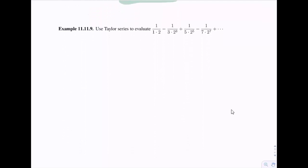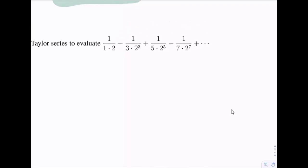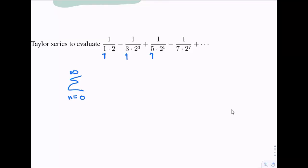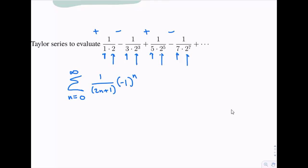Let's do one more — a bit more difficult because we don't have a general formula given. First step: express the series in sigma notation. We sum from n = 0 to infinity. There are lots of odd numbers, so we use 1/(2n+1) — plugging in n = 0 gives 1, n = 1 gives 3, then 5, 7. It alternates positive/negative, so we include (-1)^n. The numerator has powers 2¹, 2³, 2⁵, 2⁷, so we use (1/2)^(2n+1).